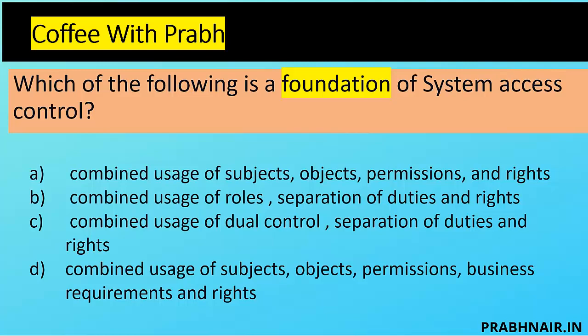The second coffee shot: which of the following is the foundation of system access control? As an architect, they're asking what is the foundation for system access controls. Option A: combined usage of subject, object, permission, and rights. We definitely need a subject (the user), an object (the folder to access), and defined permissions and rights — so option A looks very close. Option B: combined usage of roles, separation of duty, and rights — B is somewhat part of A at a higher level.